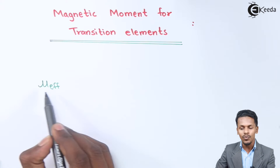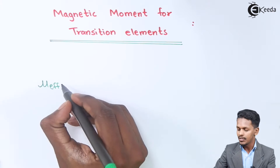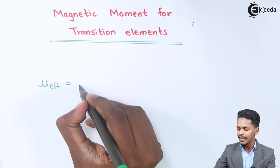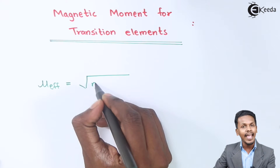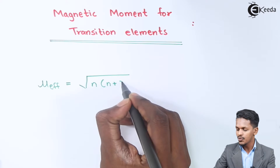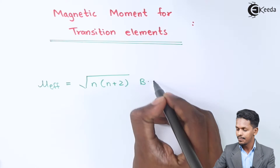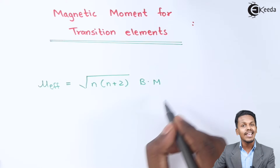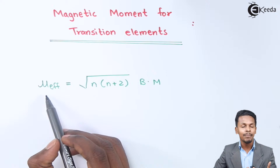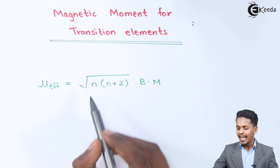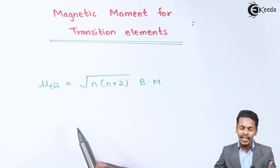Based on that we have a formula for the effective magnetic moment. So mu effective is known as the effective magnetic moment, and it has the formula: square root of n(n+2) Bohr magnetons. Bohr magneton is the unit for the magnetic moment.